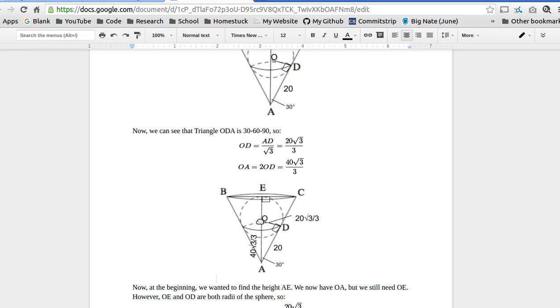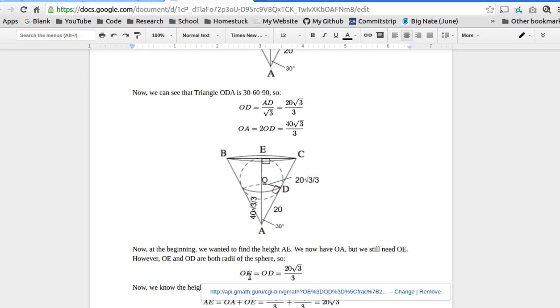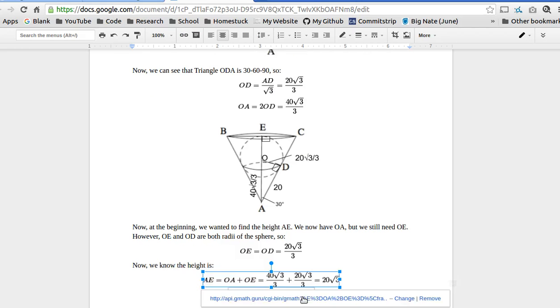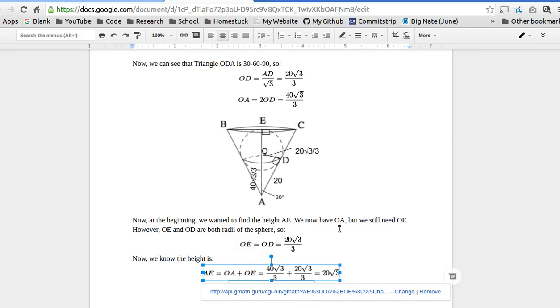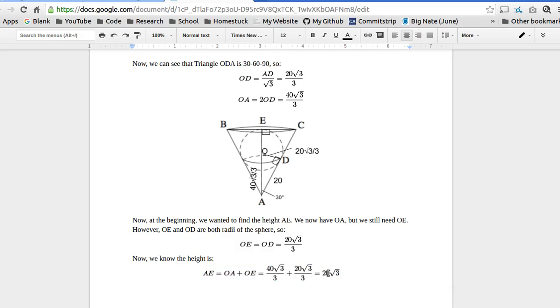OE is the radius of the sphere. Because we have OD, we now know that the radius of the sphere is 20 square root of 3 over 3. So that's what OE is. OE is OD, which is 20 square root of 3 over 3. So now the height is OA plus OE. So 40 square root of 3 over 3 plus 20 square root of 3 over 3 is 60 square root of 3 over 3. Which 60 over 3 is 20, so we just get 20 square root of 3. So the height is 20 square root of 3.